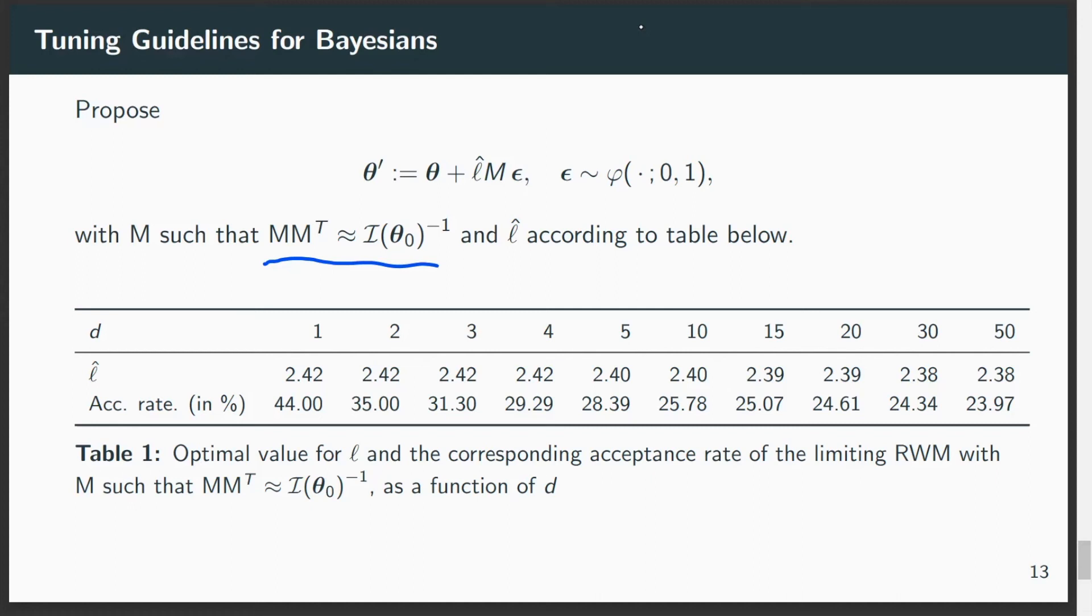And based on this setting, we do find that matching those, we get optimal values for the scaling parameter L and the optimal acceptance ratio that is associated with it. For example, in the one-dimensional case, 44%. This is a well-known fact. In previous work, it has been shown analytically that in a one-dimensional case, the expected squared jumping distance is optimized if this is around 44.04%.